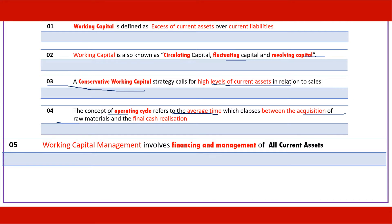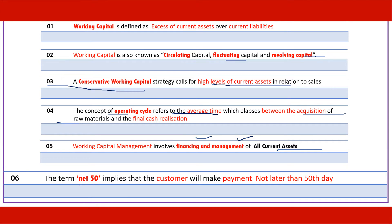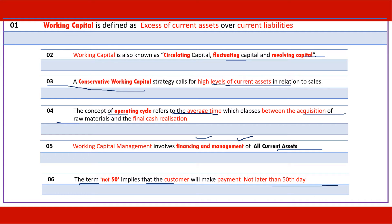Working capital management involves all current assets and deals with their financing and management. The term 'net 50' refers to a credit period whereby the customer will make payment not later than the 50th day.